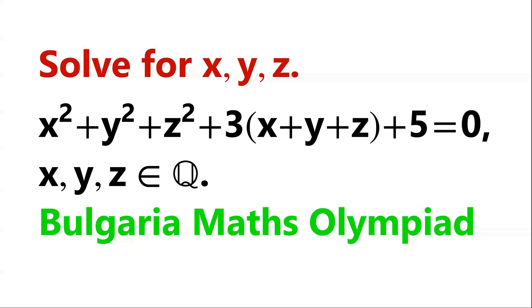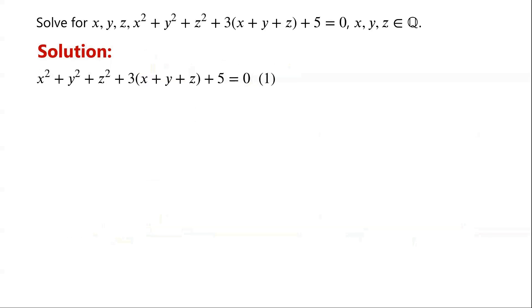Solve this equation, where x, y, and z are rational numbers. There are three variables in one equation. How to solve this equation? It seems to be not straightforward.